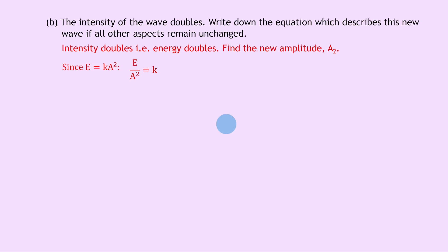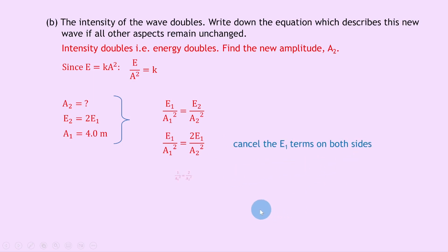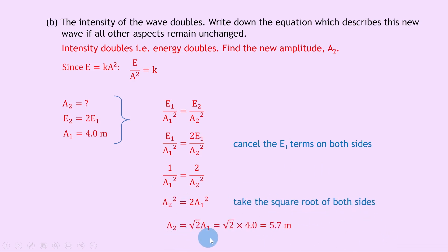We want to find A2. The final energy E2 is double the initial energy E1, and the initial amplitude A1 is 4.0 metres. Substituting E2 equals 2E1 into our equation gives E1 over A1 squared equals 2E1 over A2 squared. Cancelling E1 on both sides gives 1 over A1 squared equals 2 over A2 squared. Cross multiplying gives A2 squared equals 2A1 squared. Taking the square root of both sides: A2 equals root 2 times A1 equals root 2 times 4.0, giving a new amplitude of 5.7 metres.